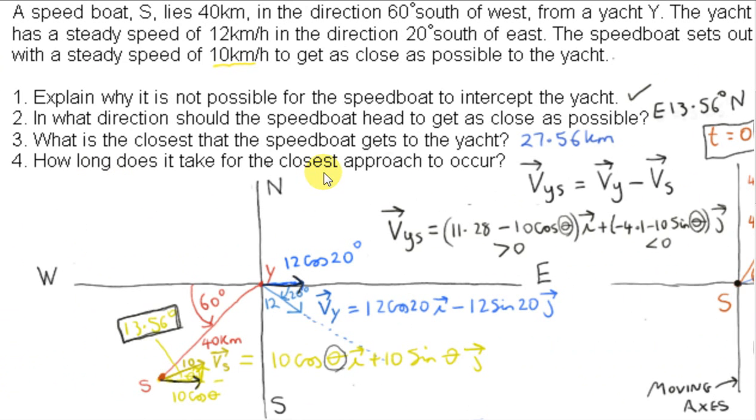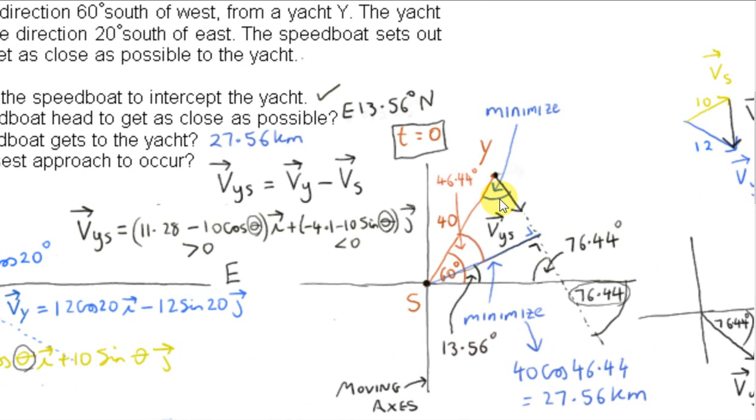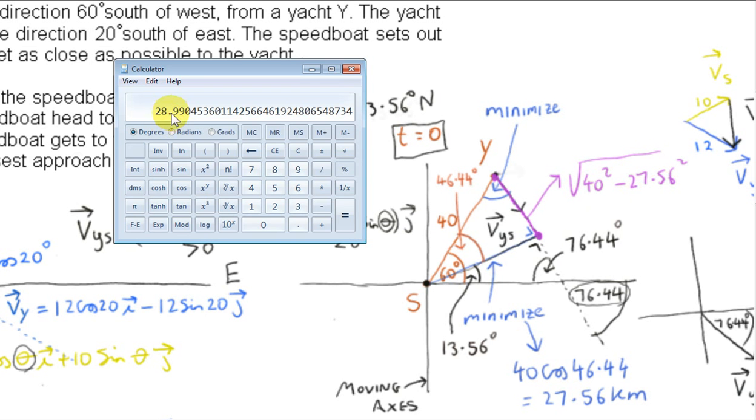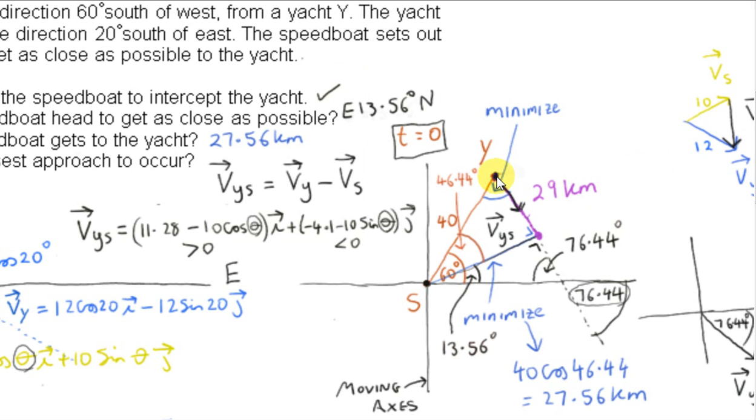Finally, we want to find out how long it takes for the closest approach to occur. So from S's perspective, the yacht is moving in this direction with velocity VYS. So here's the velocity vector. And we want to see how long it takes the yacht to go from here to here as seen by S. So for one thing, we need to find this distance. So let's do that first of all. Well, we can use Pythagoras to do that because this is the third side of a right angle triangle. The hypotenuse is 40. The other short side we just found is 27.56. So this short side here is the square root of the hypotenuse squared minus the other short side squared. Now, if we round this to the nearest integer or even one decimal place, we get 29.